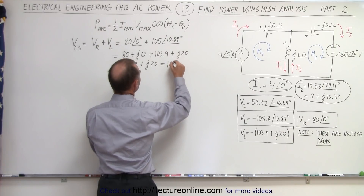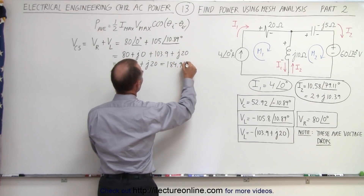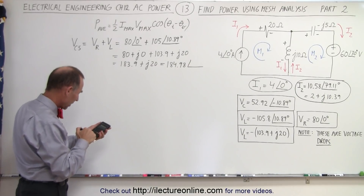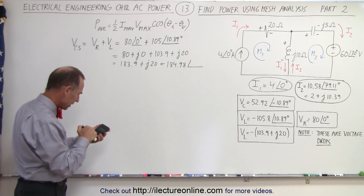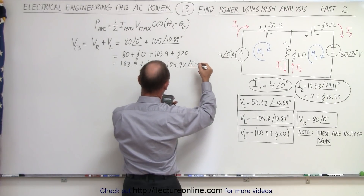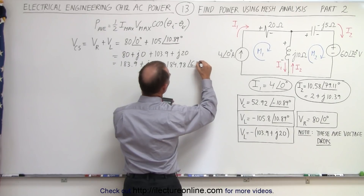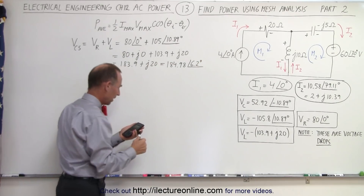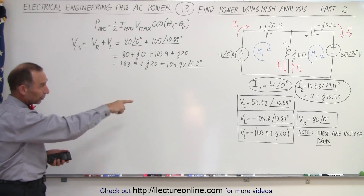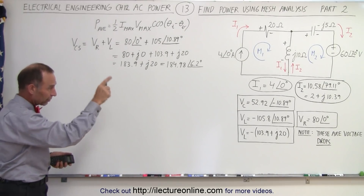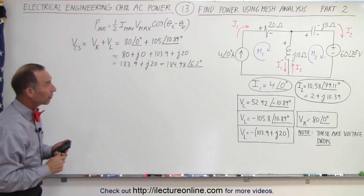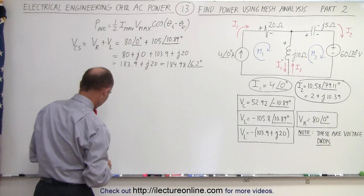So that would be 184.98 with a phase angle of 20 divided by 183.9, taking the inverse tangent — that gives 6.2 degrees. So now we have the voltage across the current supply, the voltage across the capacitor, the voltage across the inductor, and the voltage across the resistor. Now we're ready to find the power across each of the devices.